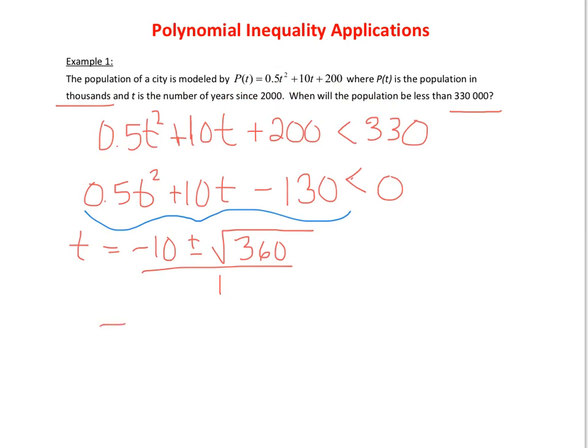So we need some approximations of this to have some idea of what we're talking about here, especially since now we're talking about an application question, so the decimal really does make sense. So when we do negative 10 plus the square root of 360, we get about 8.97, two decimal places is good. And when we do negative 10 minus the square root of 360, we get negative 28.97.